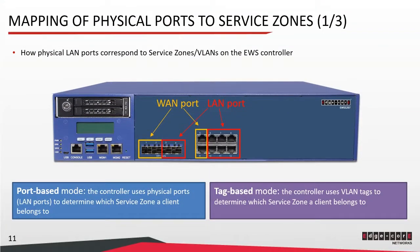You may wonder how service zones correspond to LAN ports on the controller. There are two modes you can select for the LAN ports. The first is port-based mode and the second is tag-based mode. In port-based mode, each LAN port maps to a service zone. In tag-based mode, all LAN ports are equal, and the controller uses the VLAN tag of incoming traffic to determine which service zone to direct the traffic to.